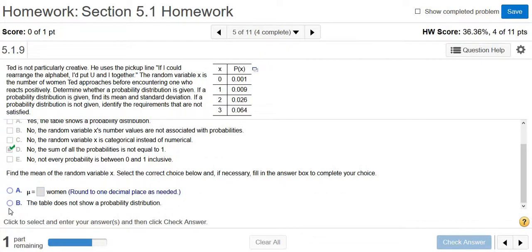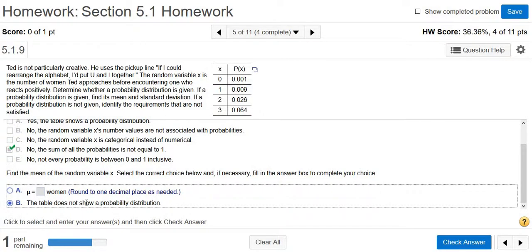Then it's asking for the mean. Well, the table does not show a probability distribution, so there is no mean. So you click that one.